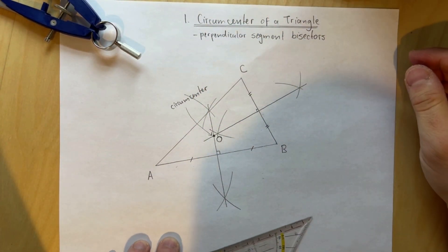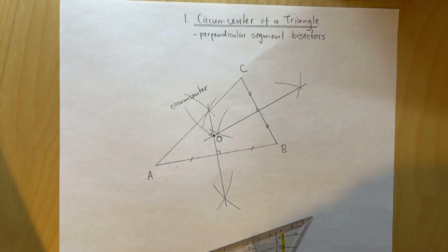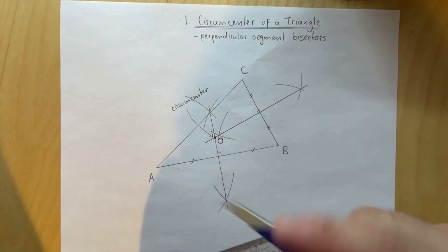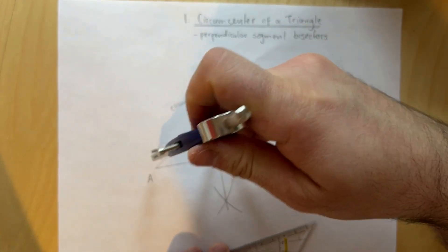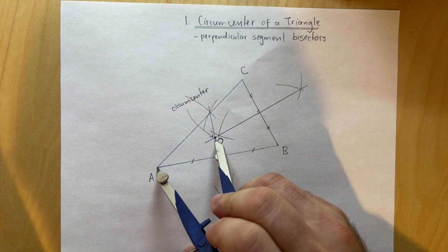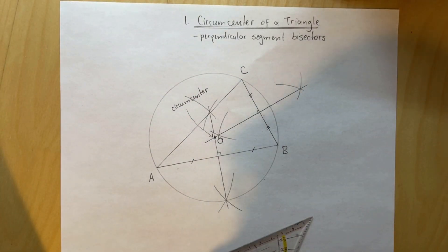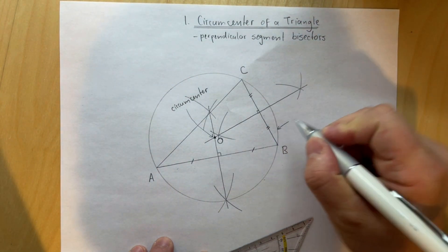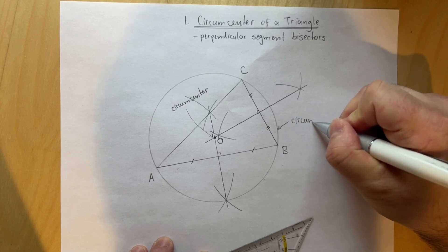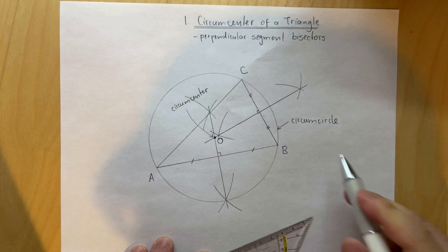The circumcenter is the center of the circle for which all three vertices lie on the circle. We put the center on O, then select the radius from O to one of the vertices, and it should go through all the vertices. We were able to create a circle circumscribed about the triangle — or we can say the triangle is inscribed inside the circle. This is called the circumcircle of the triangle.